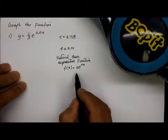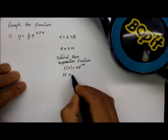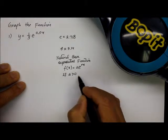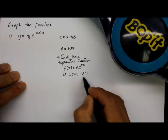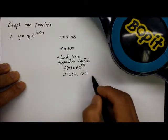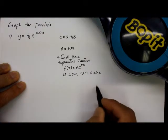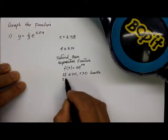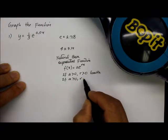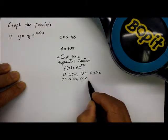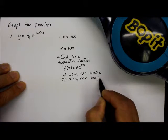There are some things to remember about this function. If the coefficient a is greater than zero and the coefficient r of the exponent x is greater than zero, then this function is exponential growth. If the coefficient a is greater than zero but r is negative, less than zero, this will be known as the decay function.